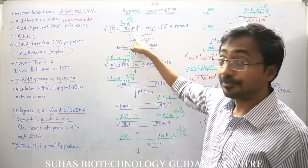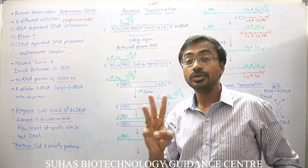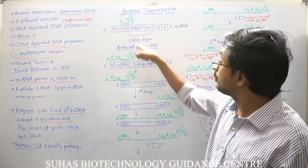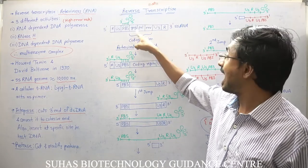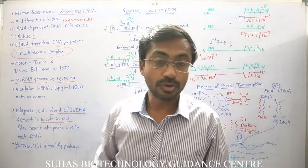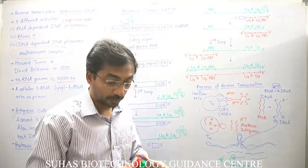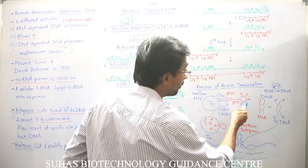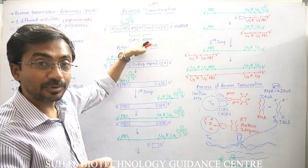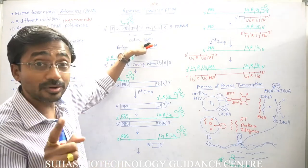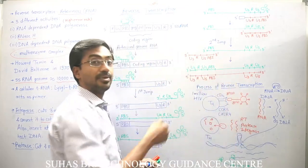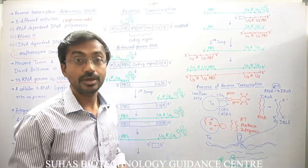After the PBS, there are three major coding regions: gag, pol, and env. Each of these can form many proteins, so they are combinations of genes. The gag region forms core proteins, pol forms reverse transcriptase and its activities (RNA-dependent DNA polymerase, DNA-dependent DNA polymerase), and env forms the viral envelope proteins including gp120 and gp41.